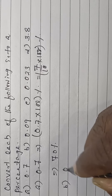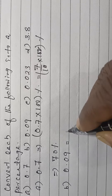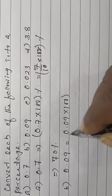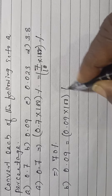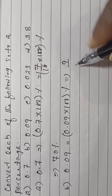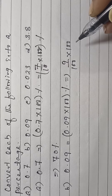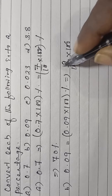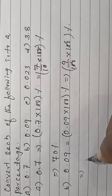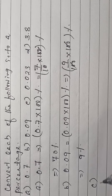B: 0.09 — then 0.09 into 100%, that is 9 by 100 into 100, cancelled with percent, giving 9%.